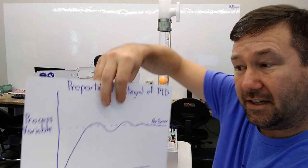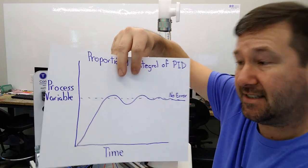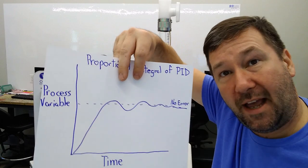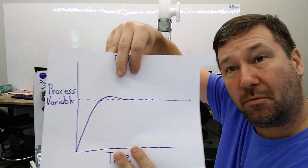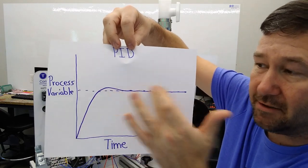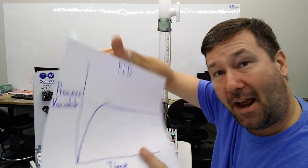Then we're going to talk about how integral helps fix that steady state error. But it does have a long path to get there. Then finally we will talk about the PID and how using those three things together you can get these nice graphs.